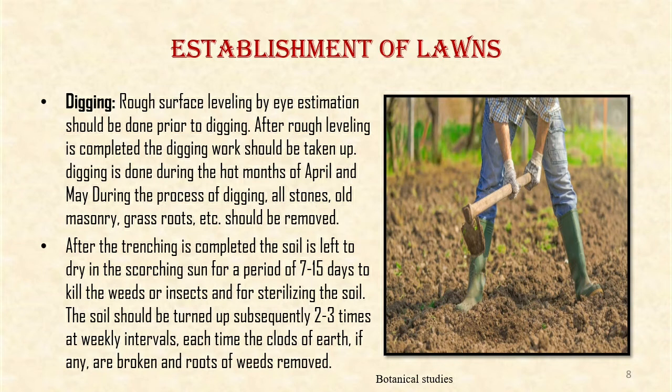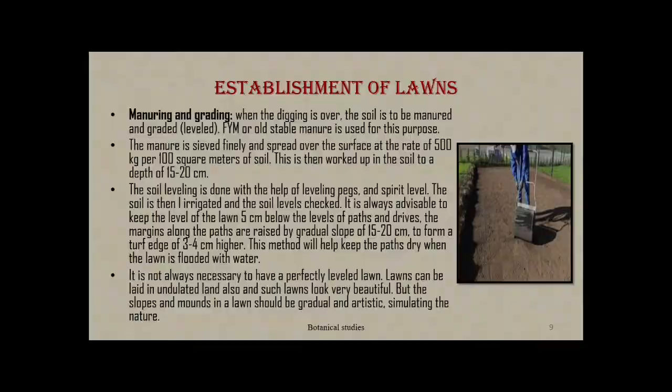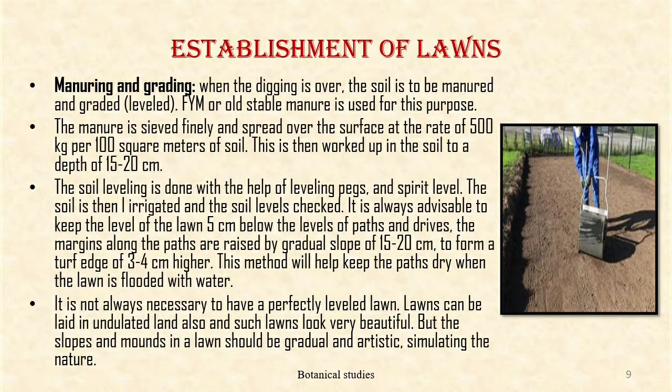After the trenching is completed, the soil is left to dry in the scorching sun for a period of 7 to 15 days to kill the weeds or insects and for sterilization of the soil. The soil should be turned up subsequently 2 to 3 times at weekly intervals. Each time the clods of earth, if any, are broken and the roots of weeds removed.